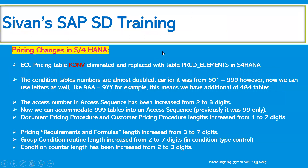The ECC pricing table KONV has been completely eliminated and replaced with the table PRCD_ELEMENTS in S4 HANA. Even if you type KONV by mistake, it will show that it is already obsolete and indicate that PRCD_ELEMENTS is the appropriate table. You will see the screen print of the same.